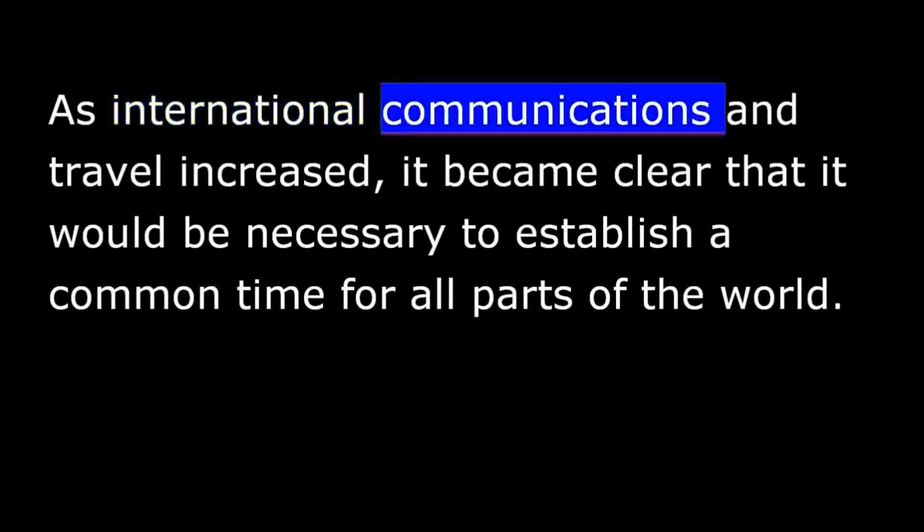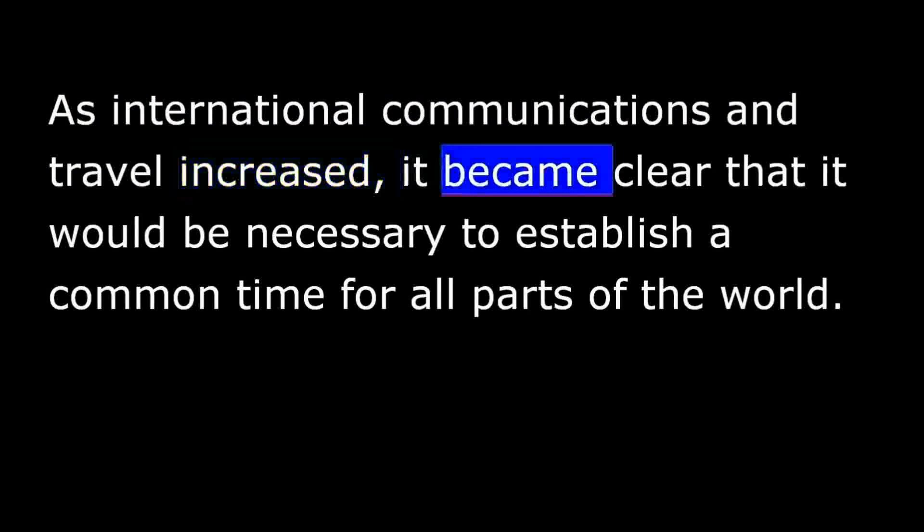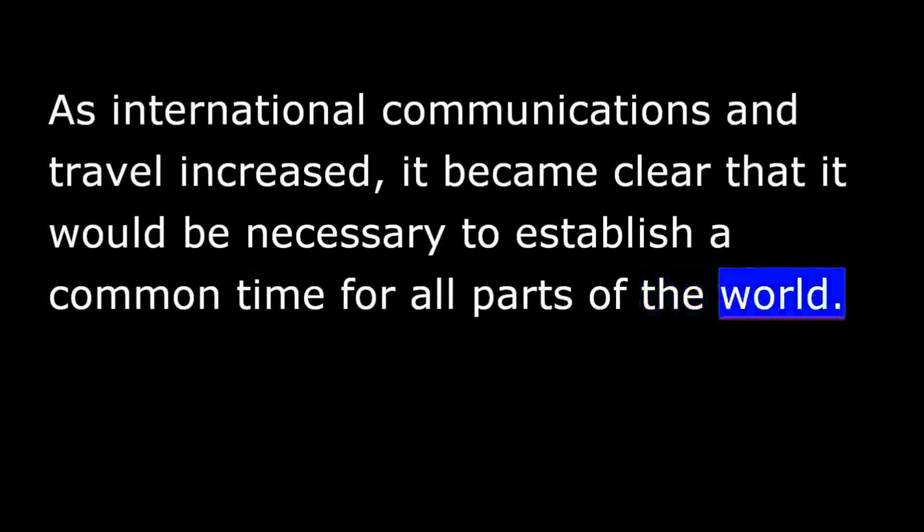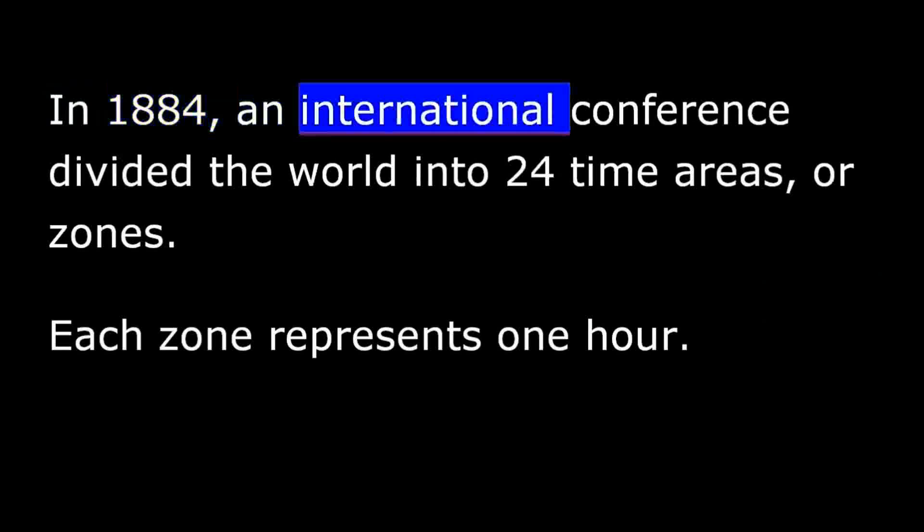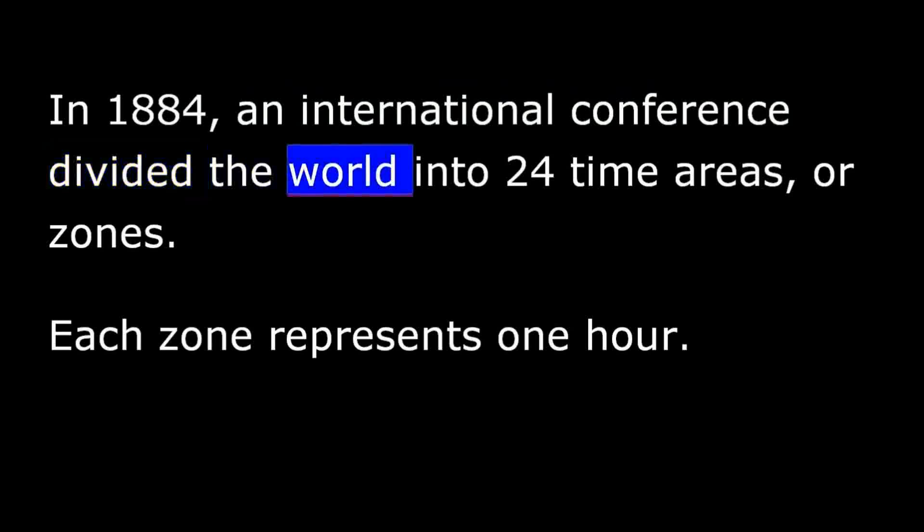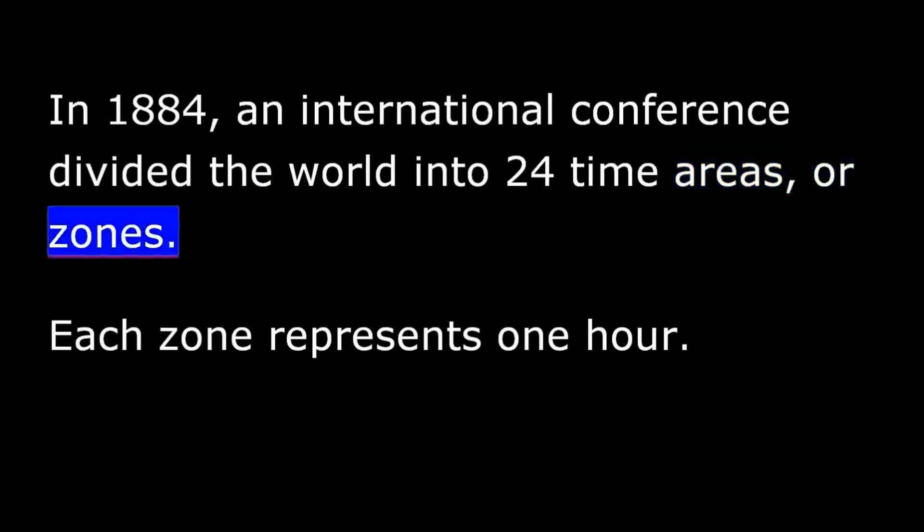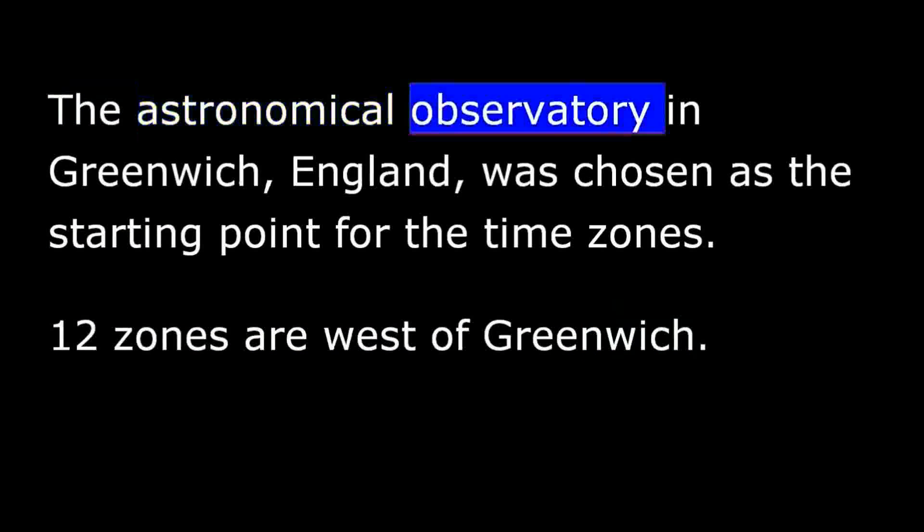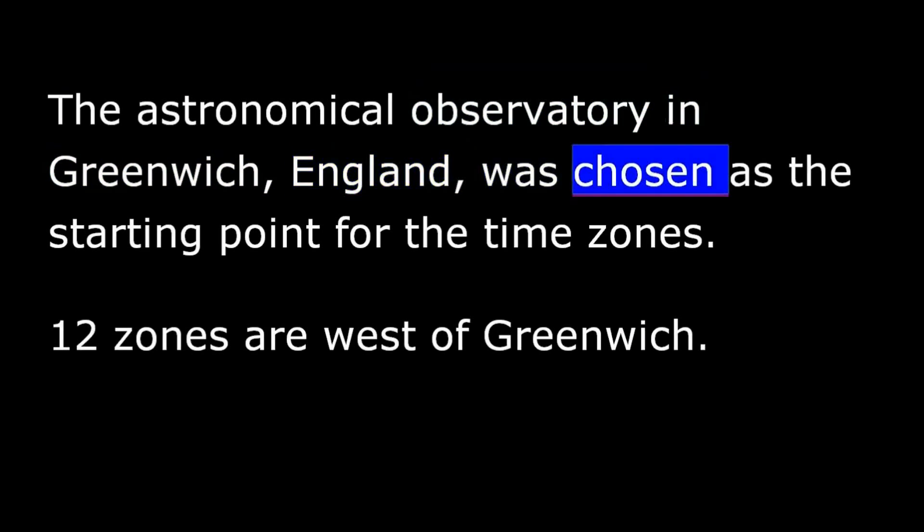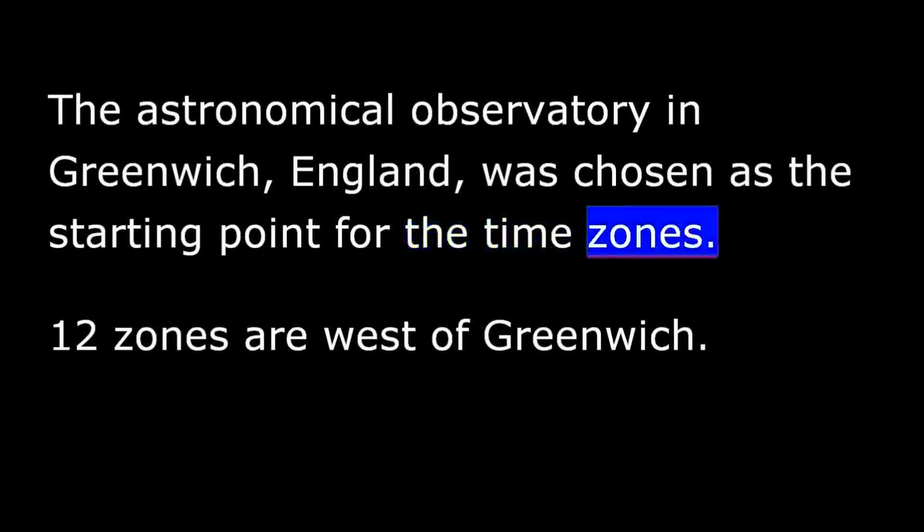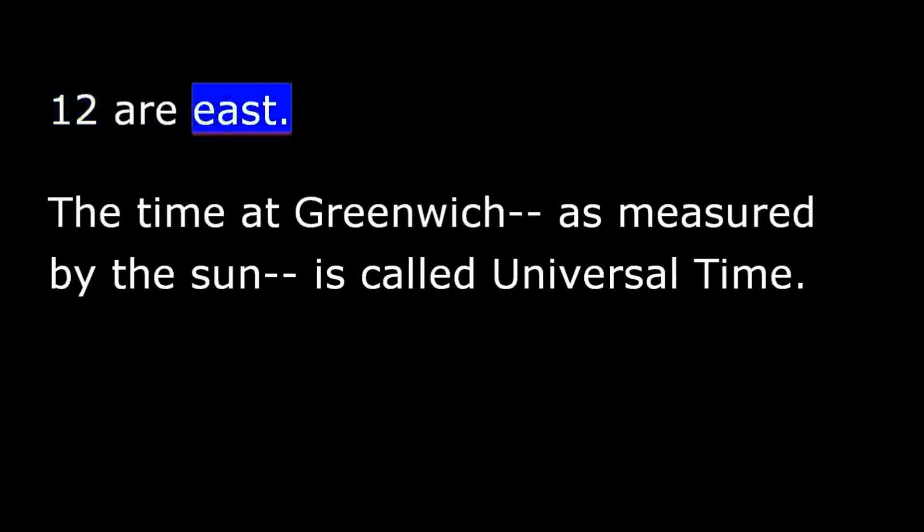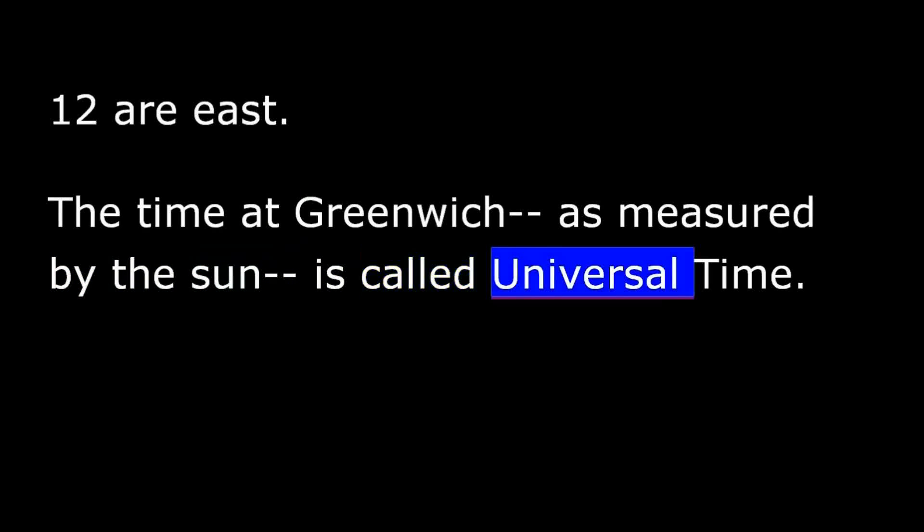As international communications and travel increased, it became clear that it would be necessary to establish a common time for all parts of the world. In 1884, an international conference divided the world into 24 time areas, or zones. Each zone represents one hour. The Astronomical Observatory in Greenwich, England, was chosen as the starting point for the time zones. 12 zones are west of Greenwich. 12 are east. The time at Greenwich, as measured by the sun, is called universal time.